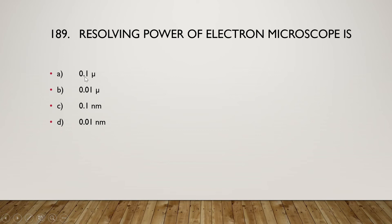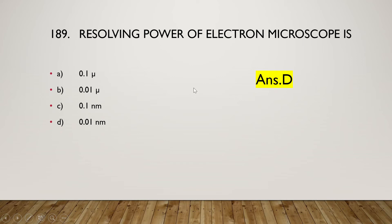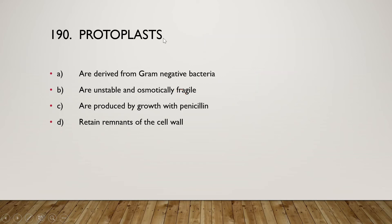The next question: the resolving power of an electron microscope is 0.1 micron, 0.01 micron, 0.1 nanometer, or 0.01 nanometer? The right answer is option D, 0.01 nanometer is the resolving power of the electron microscope. Next: what is a protoplast? Protoplasts are derived from gram-negative bacteria, are unstable and osmotically fragile, are produced by growth with penicillin, or retained remnants of the cell wall?